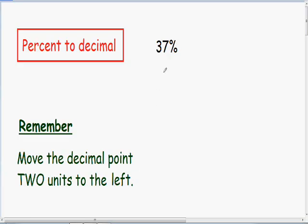Here we have 37%. The first thing I'm going to do is rewrite this with a decimal point. 37% is certainly equal to 37.0%.